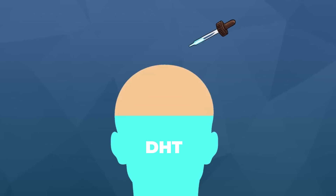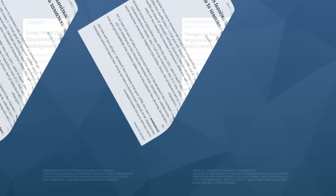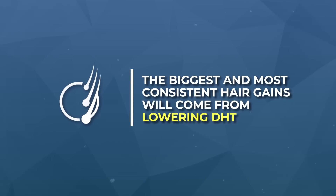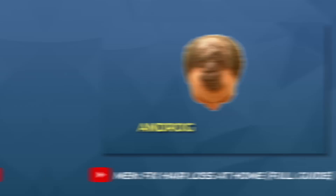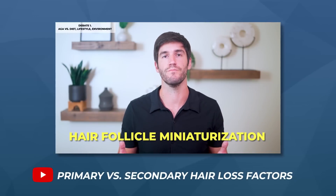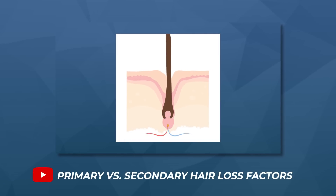A hallmark characteristic of androgenic alopecia is hair follicle miniaturization, where individual strands of hair get thinner and thinner over time until they're barely visible. The best treatment targets for androgenic alopecia involve lowering the hormone DHT, especially in the scalp. When you do this to a therapeutic level, you can see a slowing, stopping, or partial reversal of hair loss in about 80–90% of men. There are also other treatment targets involving inflammation, microcirculation, and microorganisms, and these will work for some people, but the biggest and most consistent hair gains come from targeting DHT.